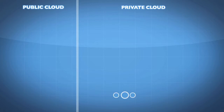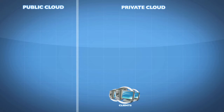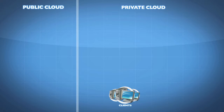On our corporate network, we have our clients — our client systems — that are the systems we need to hook into various different services. Those services could be email services, other types of communication services, or a line of business application service. The client would be something like a Windows 7 or Windows 8 client, or it could be a web-based client.